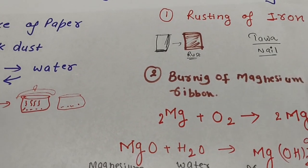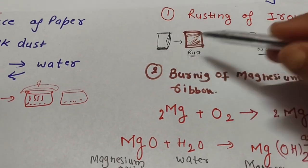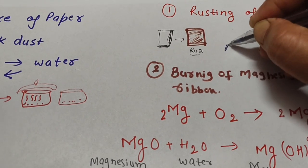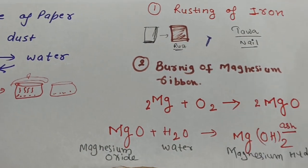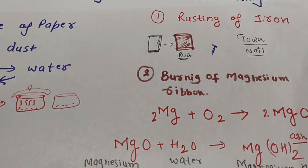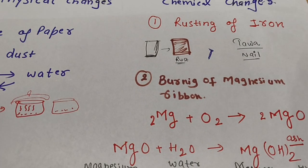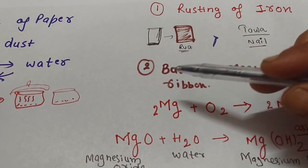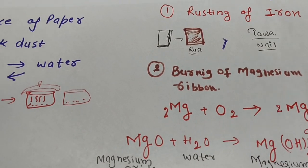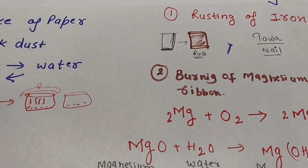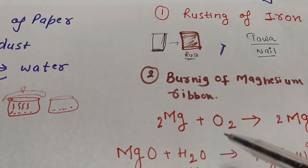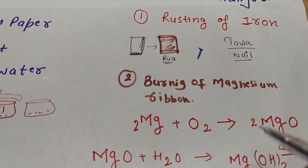If we put iron in water, we will find a brown color change. We can observe the changes clearly. Now you are in Class 7. If we see that magnesium is white and silvery, and if we burn it, what happens with oxygen? It will be converted into ash.